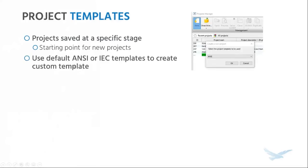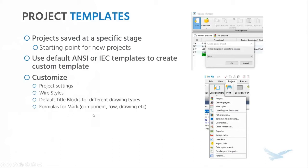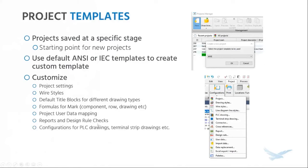The software comes with default ANSI and IEC templates, and I would recommend using them to build your custom template — essentially create a new project with the ANSI template, make your changes, and save it back as a template. Things you can customize in your template are: project settings, wire styles, the default title blocks linked to each drawing type, any kind of formula you would like to build for numbering your components, rows, drawings, etc., how you want to map user data for project properties, any reports and design rule checks you might want to add, and some default configurations for PLC drawings and terminal strip drawings.